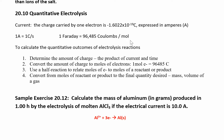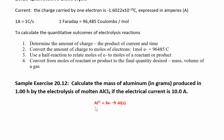Faraday's constant is how many coulombs you have per mole of electrons, and we're going to look at half-reactions where we need the stoichiometry. In this reaction, aluminum reacts with three electrons — for every three moles of electrons you get one mole of aluminum. We need to know the stoichiometry of the reaction and these unit conversions. If we know amps and seconds we get charge; from charge we get moles of electrons; from moles of electrons we get moles of solid; and from moles of solid we get grams.